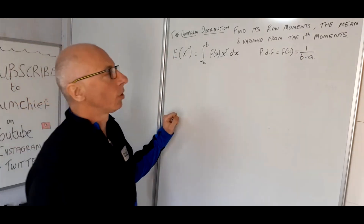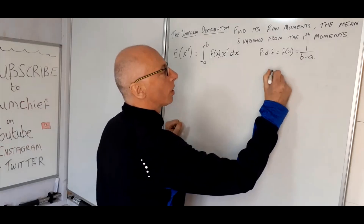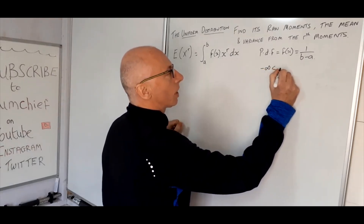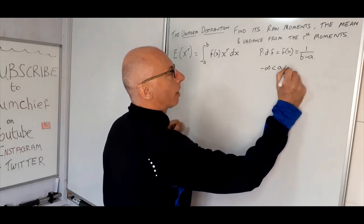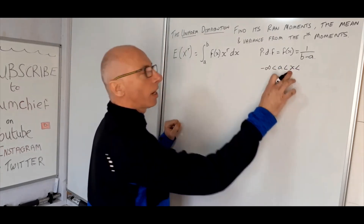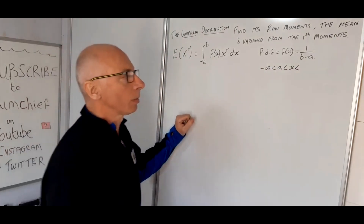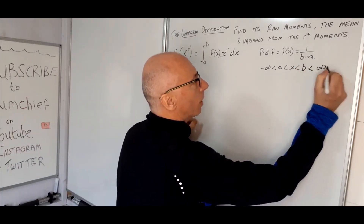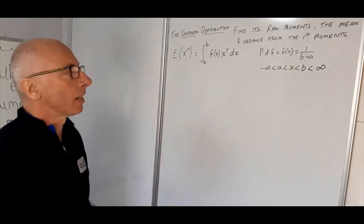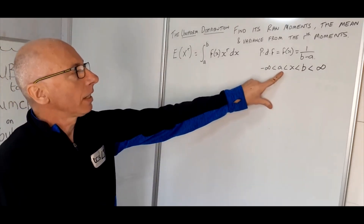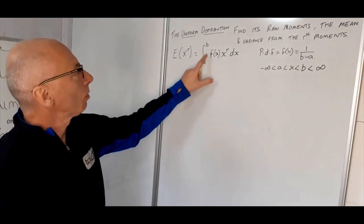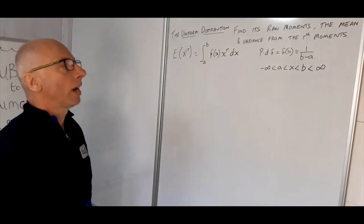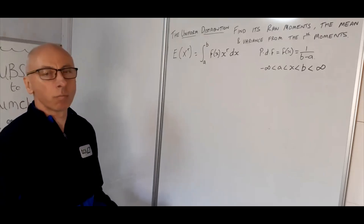The parameters for the uniform distribution range from a (which is greater than negative infinity) to b (which is less than positive infinity), with b larger than a. This condition b > a is very important when doing this integral; otherwise we would get a negative value for our raw moments.